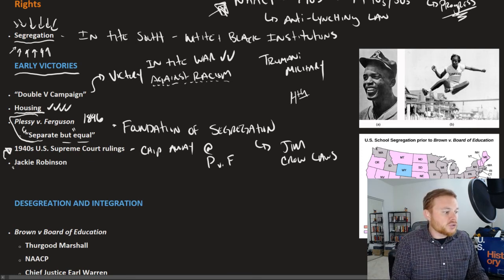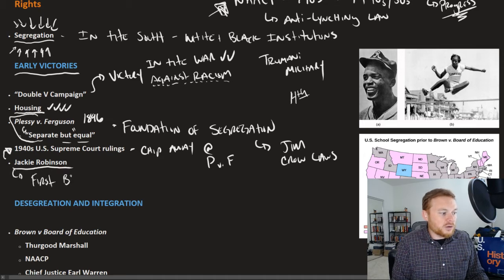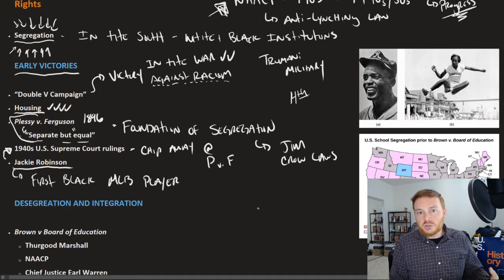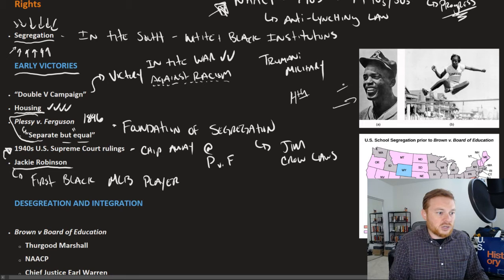Barriers were also being broken down on the cultural front. Jackie Robinson became the first African American MLB — Major League Baseball — player, once again breaking the color barrier in national league baseball. Jackie Robinson was not only the first African American in the league, but he was also a very good baseball player.